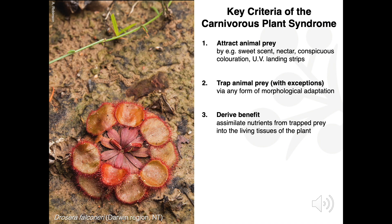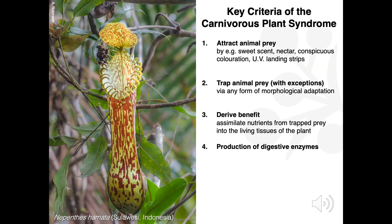This by the way is Falconer's Sundew from the Northern Territory. You can see its superficial similarity to the Venus flytrap, and they are indeed in the same family, Droseraceae, but this is an example of convergent evolution. It's actually reminiscent of what we imagine the ancestor of the Venus flytrap might have looked like. The definition of carnivory used to include the production of digestive enzymes, but we now accept that there are carnivorous plants with no digestive enzymes at all — they have their digestion done for them, mainly by insects, but also by fungi and bacteria.